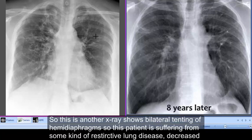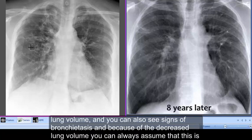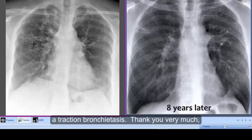This second chest x-ray shows bilateral tenting of the hemi diaphragm — this patient is suffering from some kind of restrictive lung disease with decreased lung volume. You can also see signs of bronchiectasis, and because of the decreased lung volume you can assume this is traction bronchiectasis.